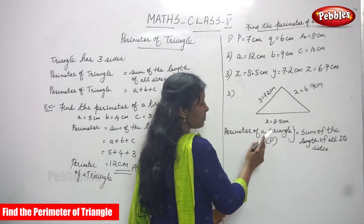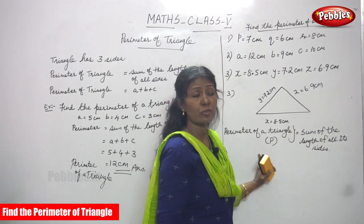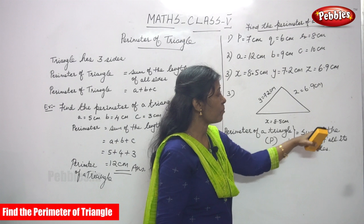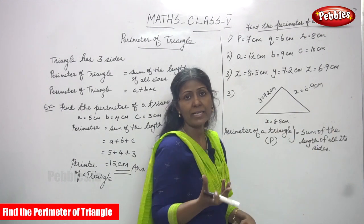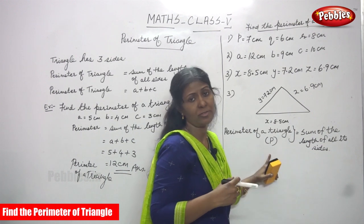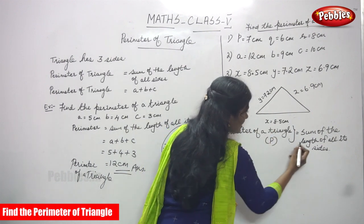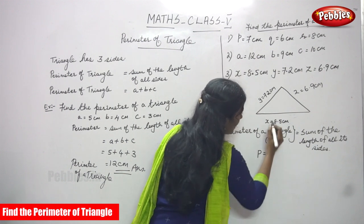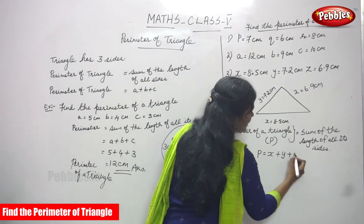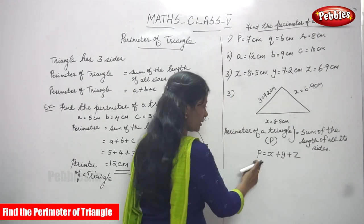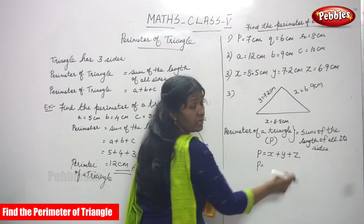P represents the perimeter of the triangle. The formula for the perimeter of a triangle is equal to the sum of the lengths of all its sides. So we add all three sides to find the total — that is the perimeter. We write: P is equal to x plus y plus z, where x, y, and z are the lengths of the three sides.